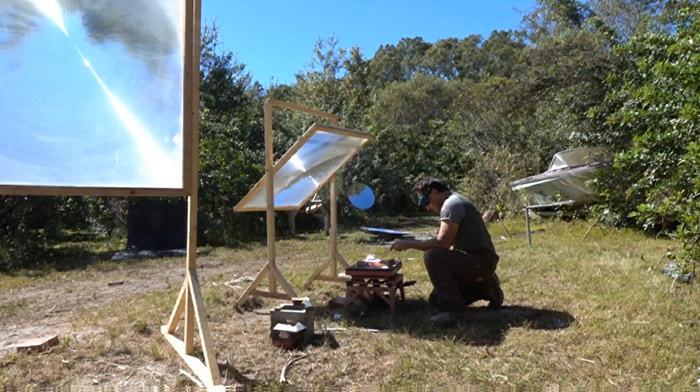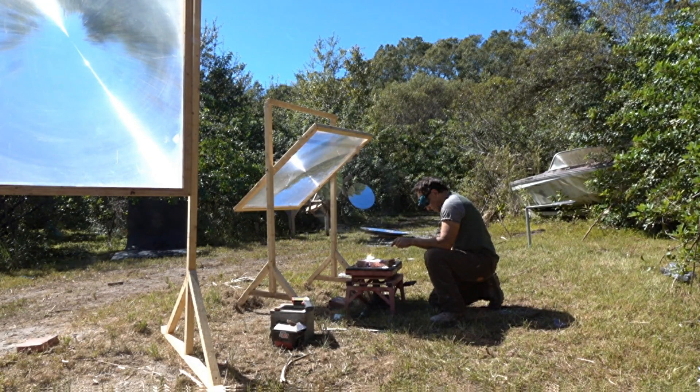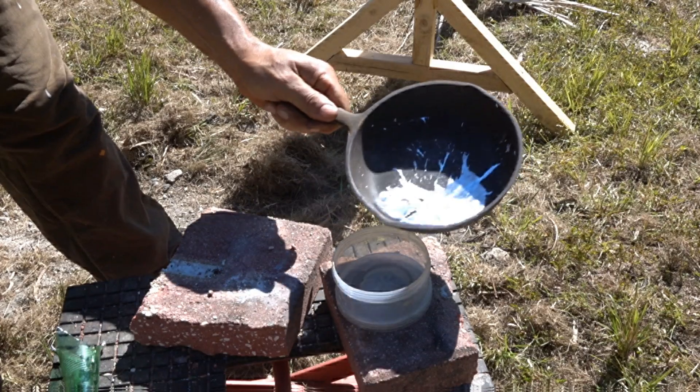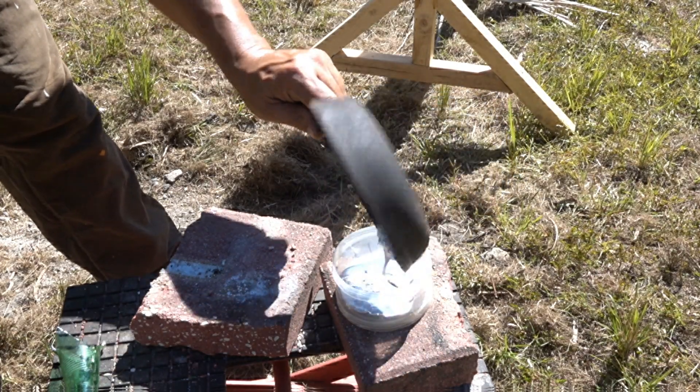While using a large Fresnel lens to melt gallium is a bit of overkill, it does work fast and it looks kind of awesome. At about 100 degrees Fahrenheit the gallium can easily be poured into a plastic tub without melting the plastic.